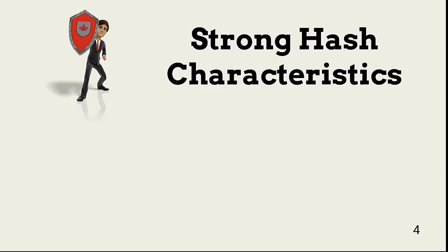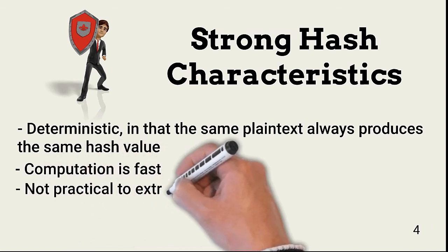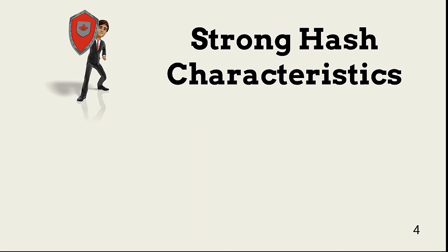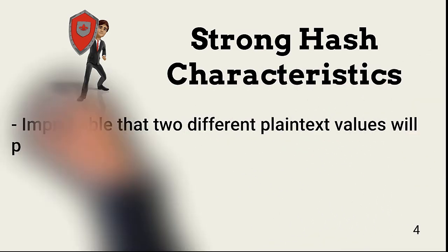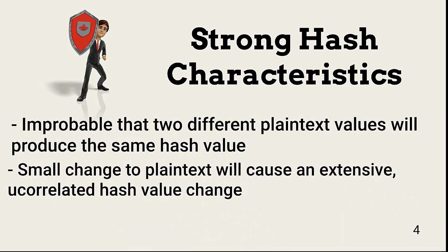Not all hash algorithms are designed the same, but what we expect from a hash solution is the same across all approaches. First, the hash algorithm must be deterministic — if I run a message through a hash algorithm 10 times, the algorithm should produce exactly the same hash value every time. Hash computation must be fast enough that use of it in production does not affect system or data availability. It should be highly improbable to extract from a hash value the plaintext used to create it. It should also be highly improbable that two different plaintext values might result in the same hash value — this is known as a collision. Any change, no matter how small, will cause a large change to the hash value, and the changes in the hash value should have no correlation to the plaintext.